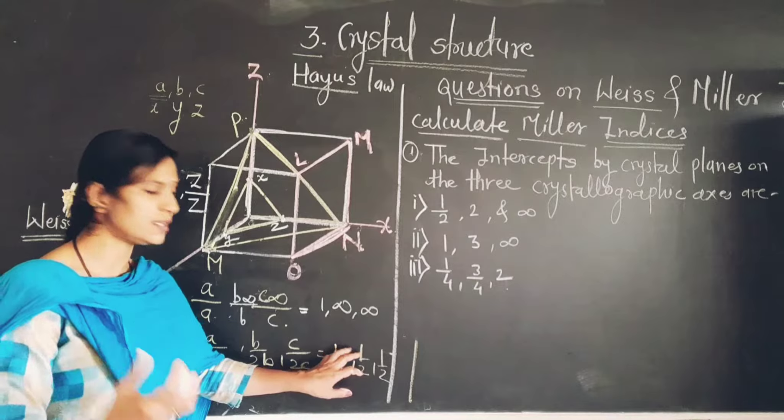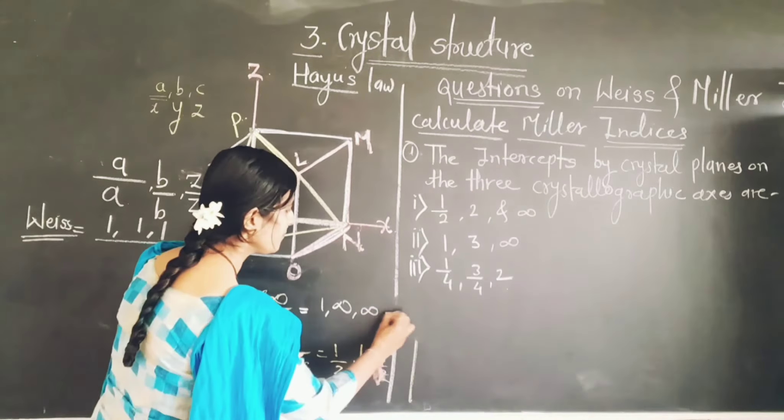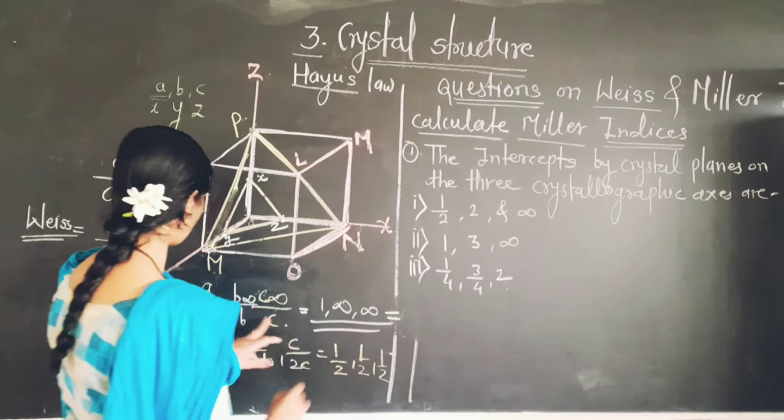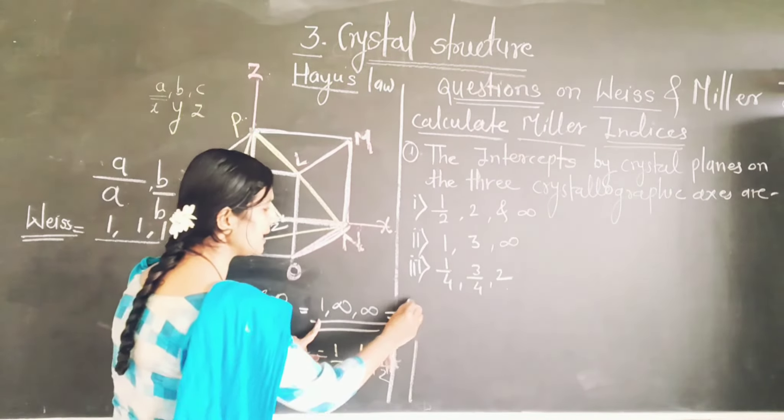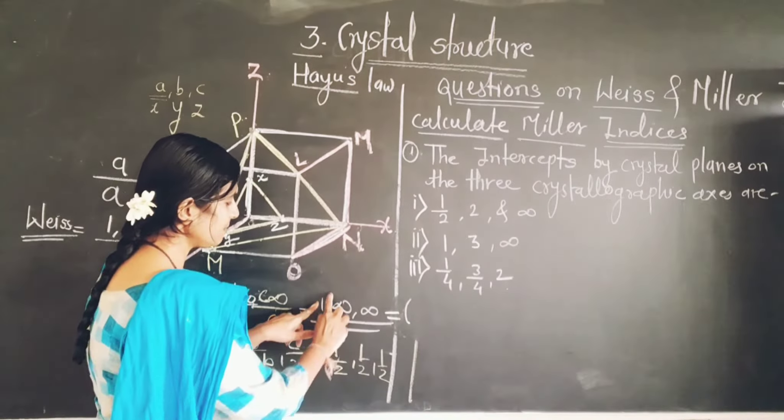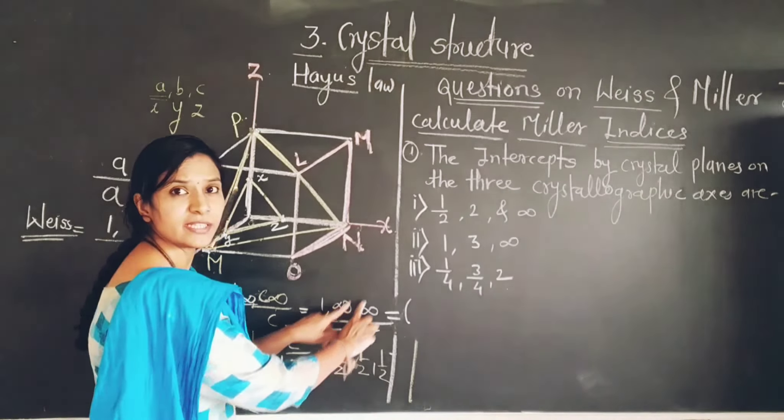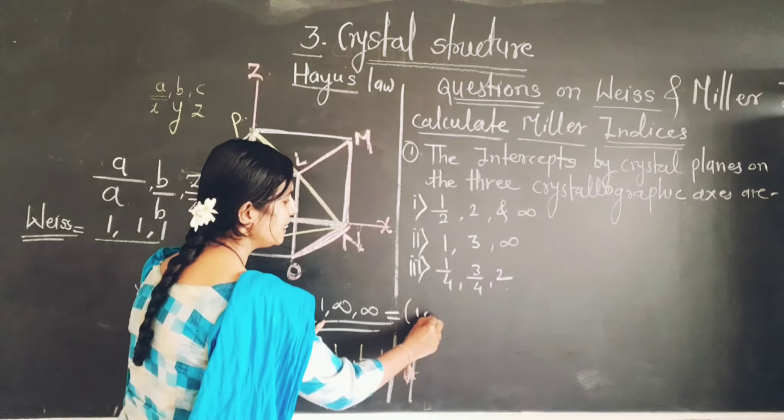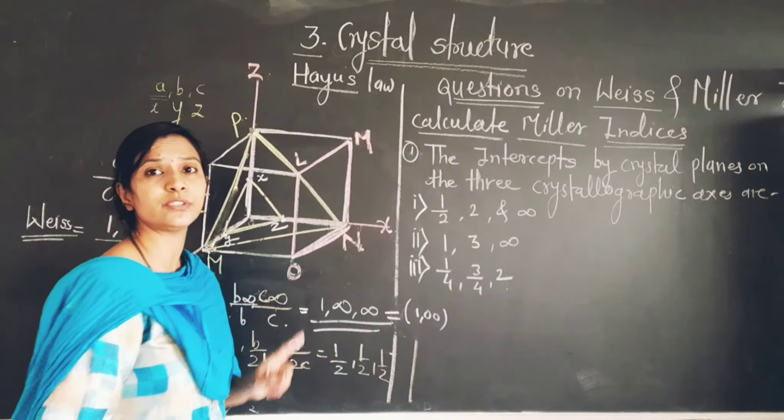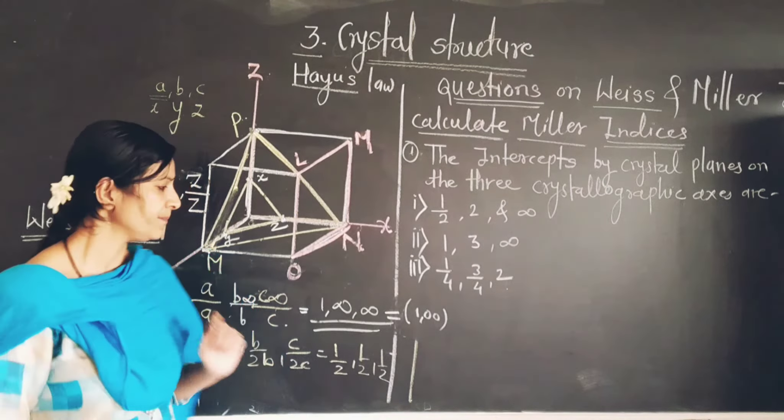So whatever Weiss indices you will get, you just take the reciprocal - you will get the whole number related to that. So it is the Weiss indices for the plane MMNO. Then what are the Miller indices for this? 1 by 1, 1 by infinity, 1 by infinity. And when you take the reciprocal of 1 by infinity, you will get the plane is 1, 0, 0.